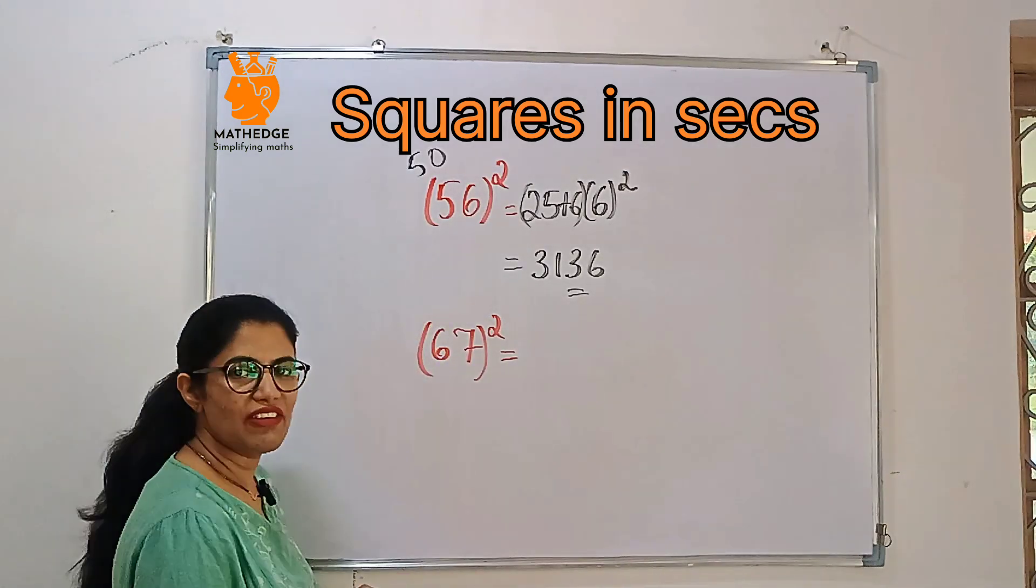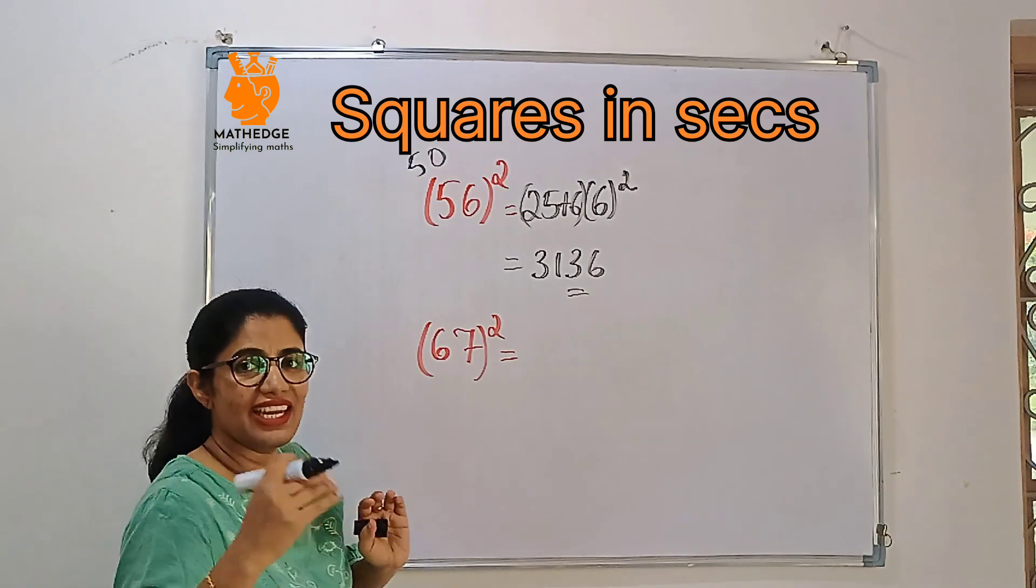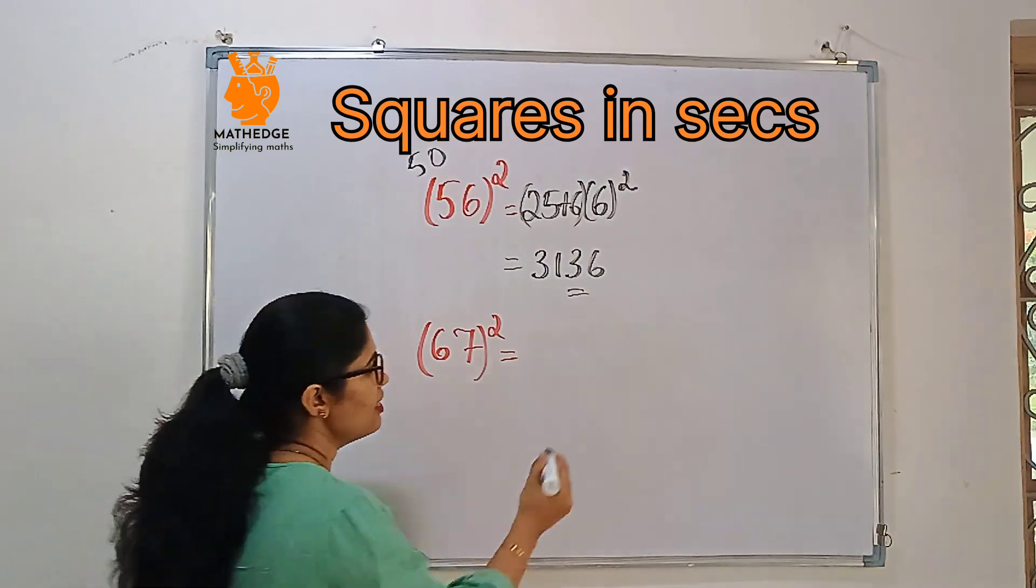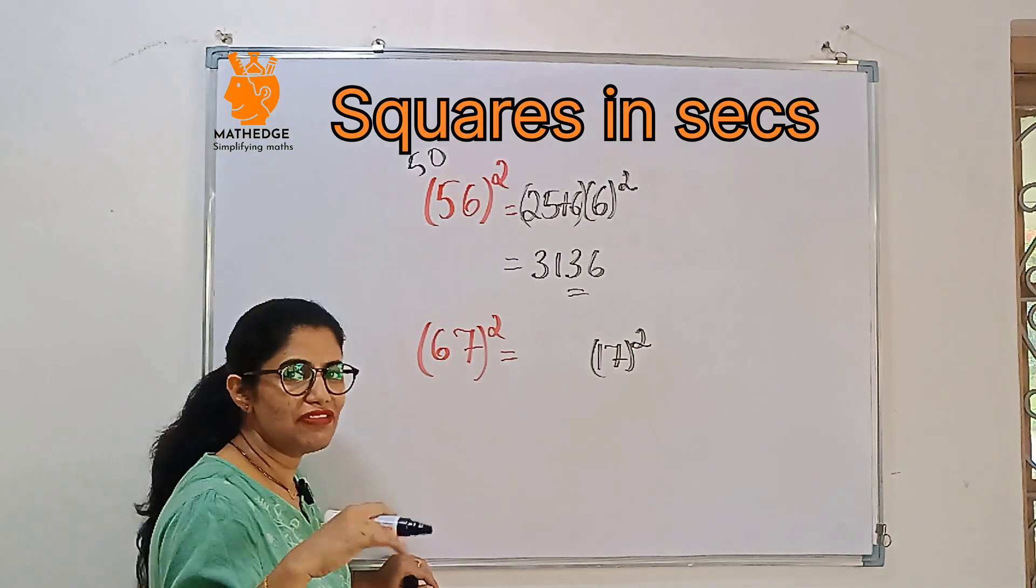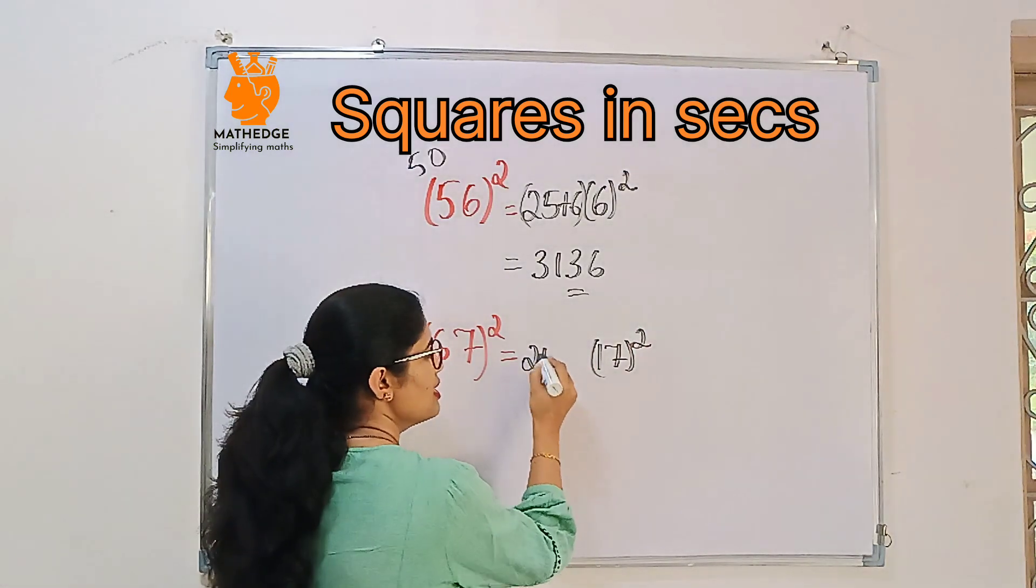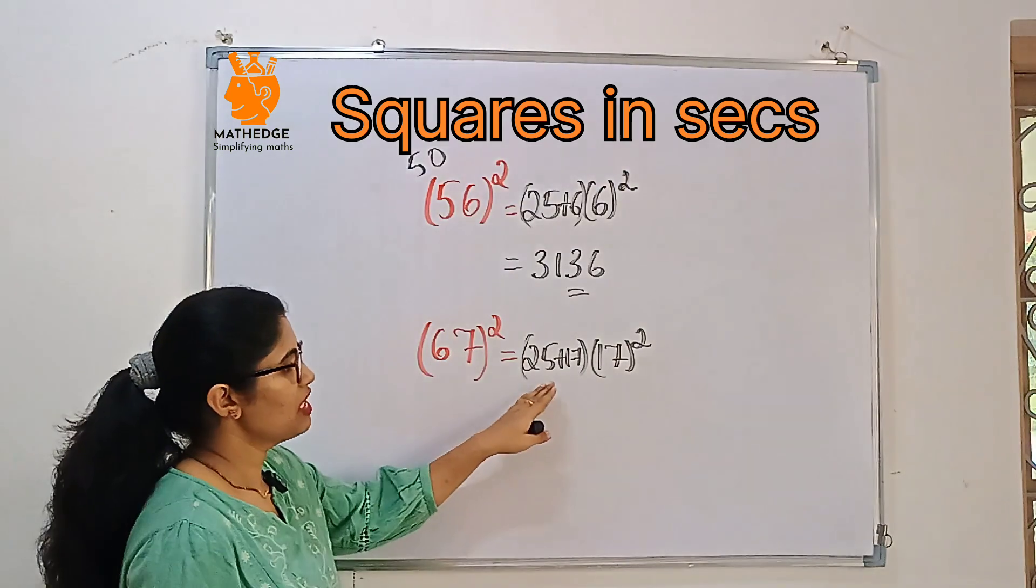Yes. Let's do 67 whole square. Again, we take base 50. How much is it greater? It's 17 greater. So write that: 17 squared. Then after that, 25 plus this extra number 17. So 25 plus 17.